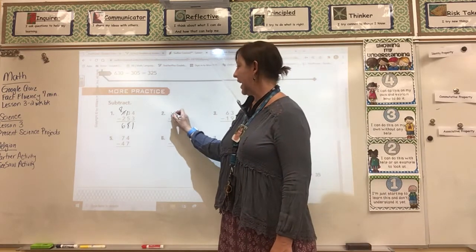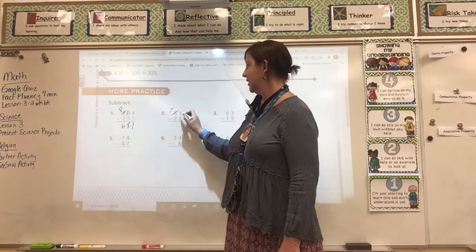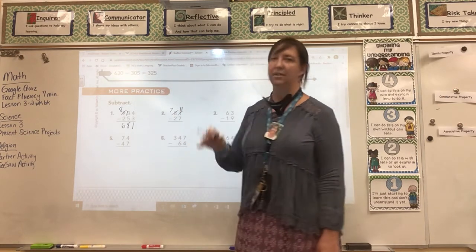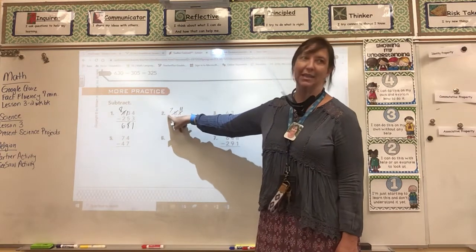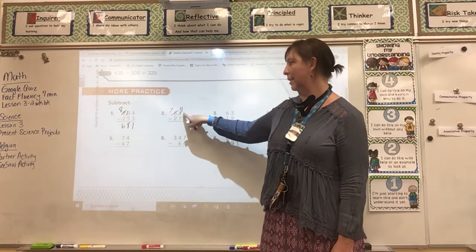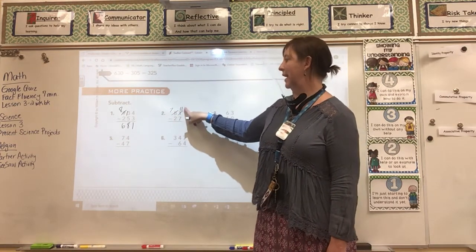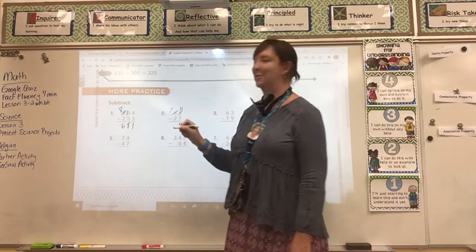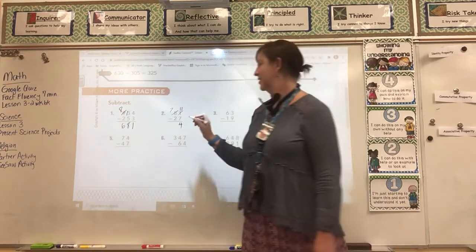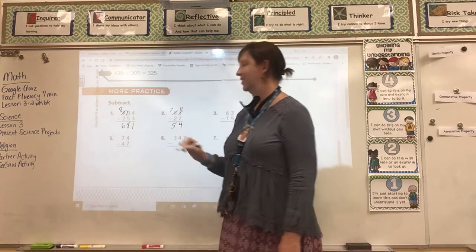And so we cross out the 8 and make it a 7. This becomes an 11. So I borrow 10 from the other side, from my tens place. I'm bringing a 10 and putting it in my ones place. So it becomes 11 minus 7 is 4. 7 minus 2. So my answer is 54.